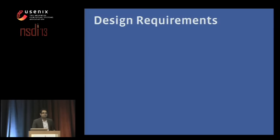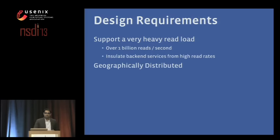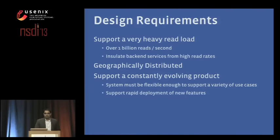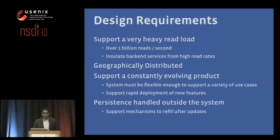What kind of design requirements does this impose on our system? First, we need to support a very heavy read load — over a billion gets per second — and we store trillions of items in our cache. We need to be geographically distributed, with data centers around the world. We need to support a constantly evolving product; our product engineers love to change things. And we need to support rapid deployment of new features. Luckily, we do not handle persistence guarantees — we are a cache, we can evict things, and we have mechanisms to support refill.